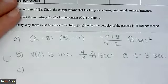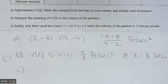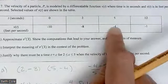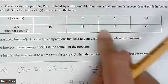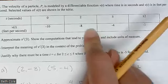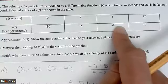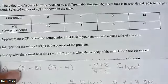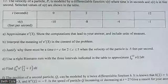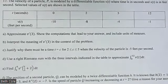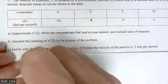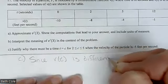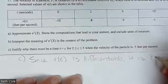Letter C: justify why there must be a time — it says T equals C, which just means T is something — from 2 to 5, somewhere in between, where the velocity is negative 5. Negative 5 is in between those values, so we're using the Intermediate Value Theorem. Since velocity is differentiable, it is continuous.